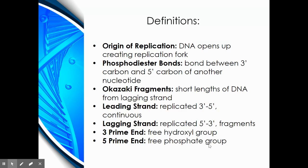The other terms within this presentation are defined here. The origin of replication is the location in which DNA opens up, creating a replication fork. Phosphodiester bonds are bonds formed between two nucleotides. It links the 3' carbon of one sugar nucleotide to the 5' carbon on another.